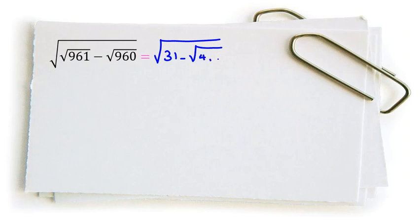960 is 4 times what? 240. We can write it as square root of 31 minus 2, since square root of 4 is 2, giving us 2 times square root of 240.